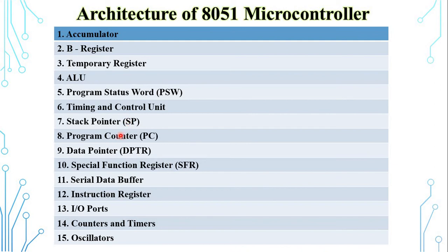The program counter is a 16-bit register used as a memory pointer, storing the address of the next instruction to be executed. It is automatically incremented after every instruction is fetched, and it is the only register that does not have any internal address. The data pointer is also a 16-bit register containing two 8-bit registers: the data pointer high-order register and the data pointer low-order register. It is used to hold the 16-bit address when addressing external memory.